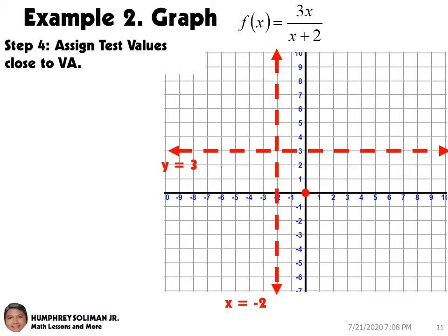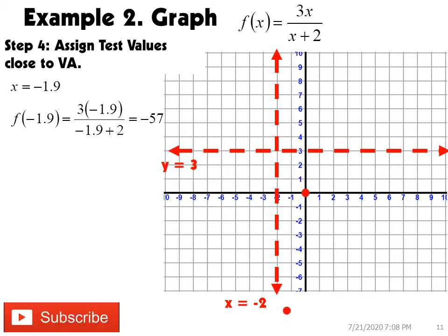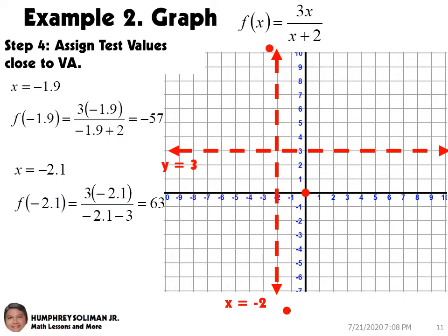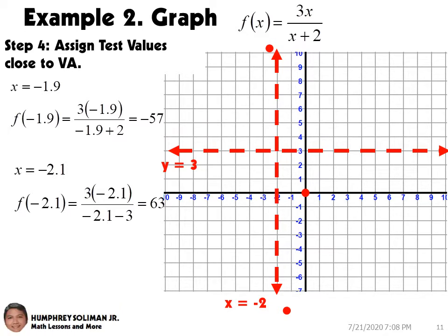Step number 4, we need to assign test values close to our vertical asymptote. This will help us find points that determine the direction of the graph as it approaches the vertical asymptote. Starting with x equals negative 1.9, this gives us a y value of negative 57, so our first point is (−1.9, −57). Our next test value is negative 2.1, which gives a y value of 63, so our second point is (−2.1, 63). The graph tends to go downward as it approaches the vertical asymptote from the right, and goes upward as it approaches from the left. We are now ready to graph our rational function.